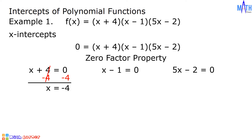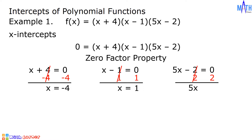In x minus 1 equals 0, we need to add positive 1 on both sides of the equation. Since negative 1 plus 1 is equal to 0, we have x on the left side. On the right side, 0 plus 1 is equal to 1. For 5x minus 2 equals 0, divide both sides of the equation by 5. 5x divided by 5 is equal to x. On the right side, 2 divided by 5 or 2 over 5 is already in lowest terms. The value of x is equal to 2 over 5.